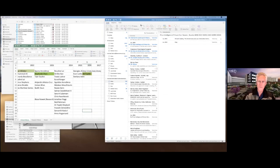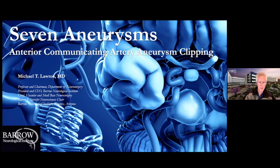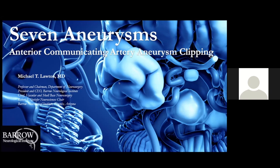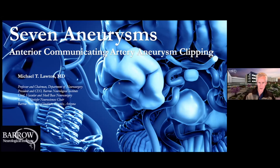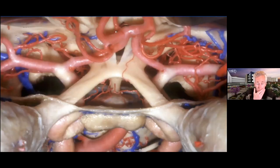Dr. Lawton begins his screen share. This is week three, working down the list of common aneurysms. The anterior communicating artery aneurysm is a big one — it's important because so many of the ruptured aneurysms you'll see are ACoMs, and the anatomy here is complicated.